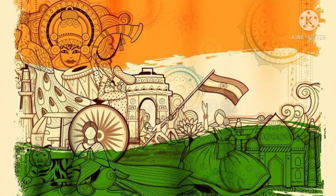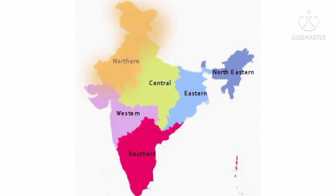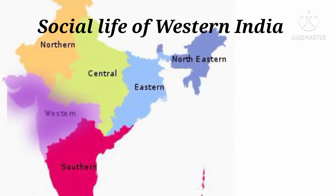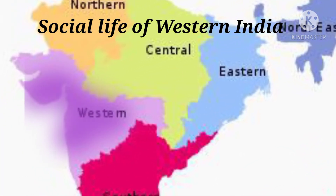You can see in the picture that in India we have different festivals, different types of residence, varieties in food, attire, etc. Majorly India is divided into four parts: northern, western, southern, and eastern. Now we will study different peculiarities of each region. Central and northeastern are also parts of the social life of western India.